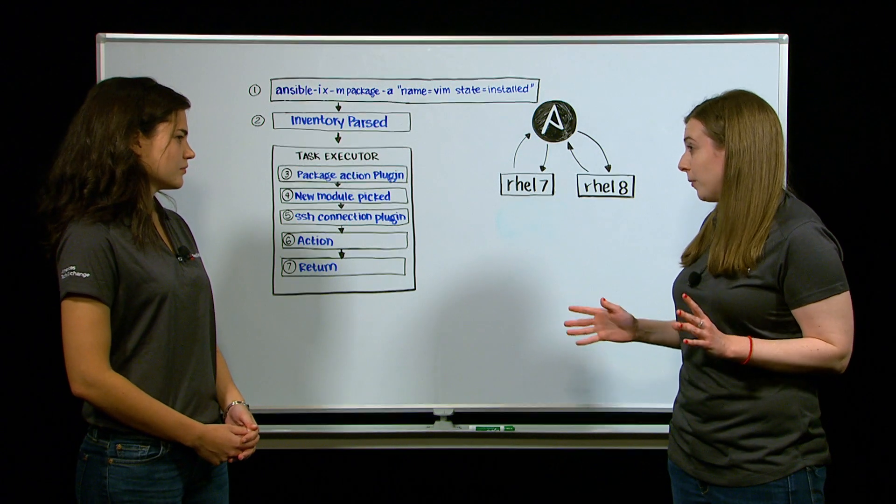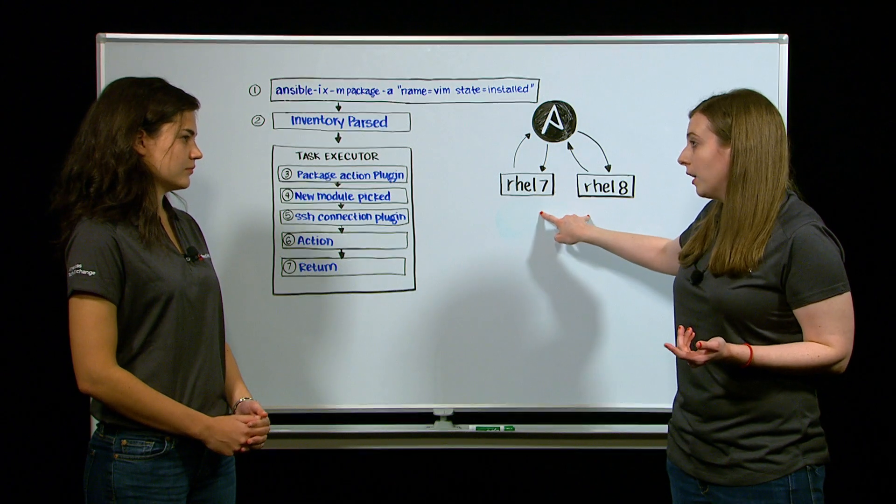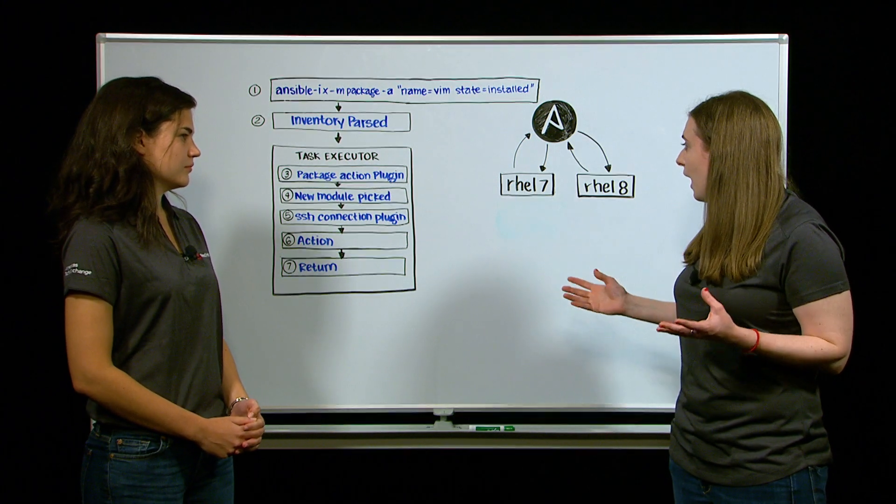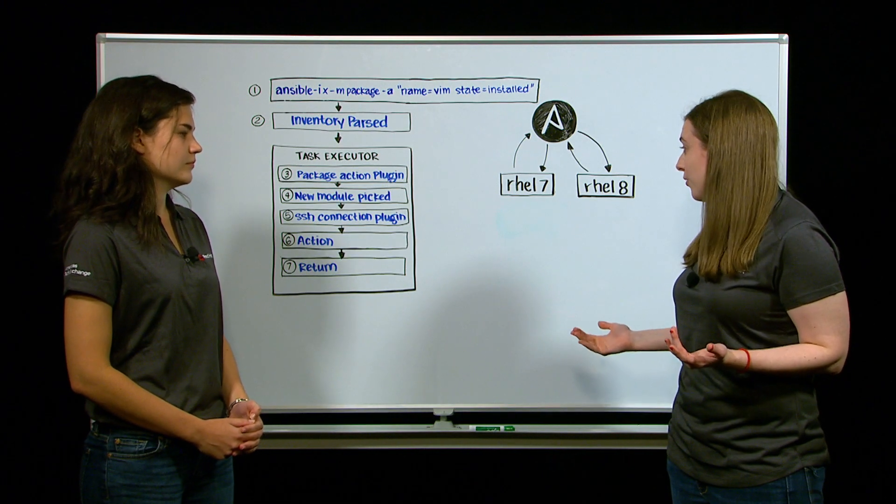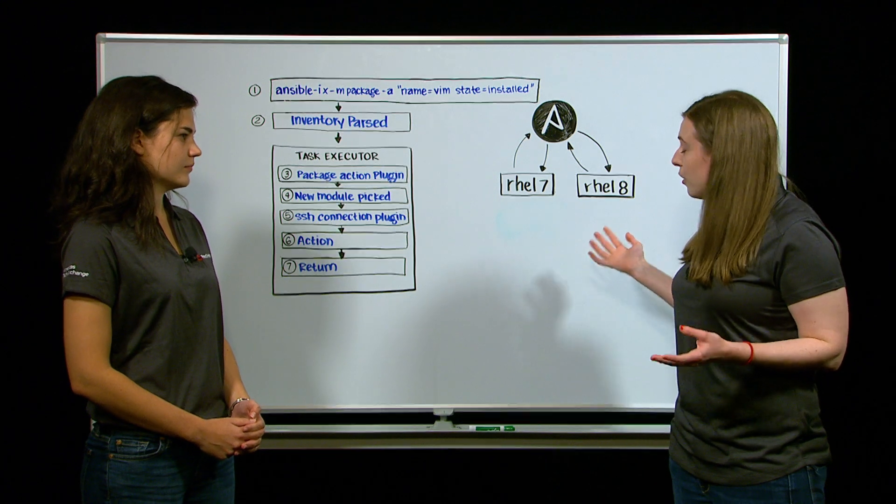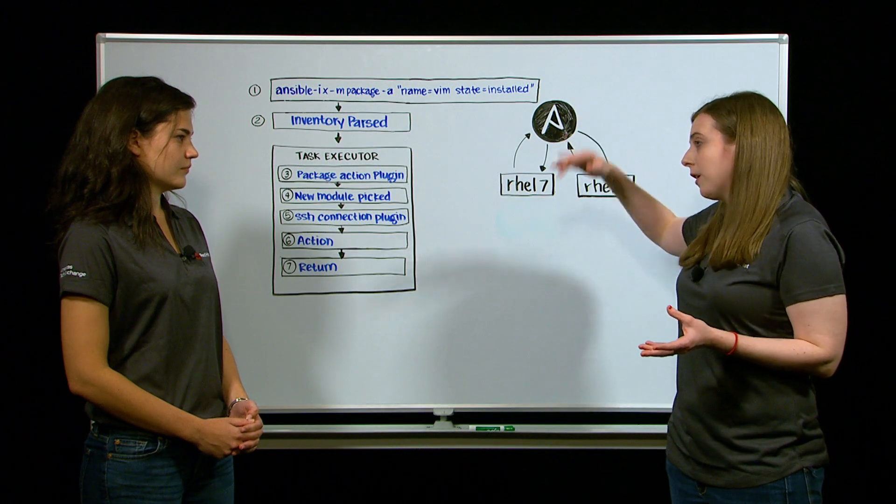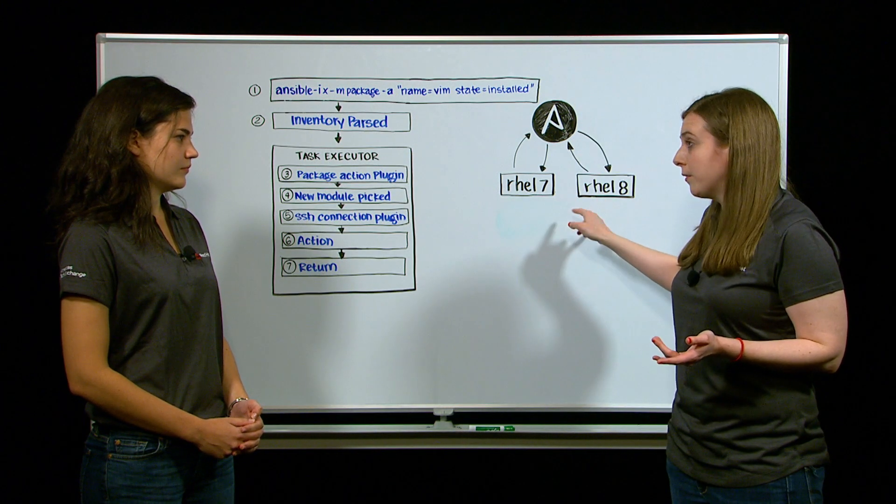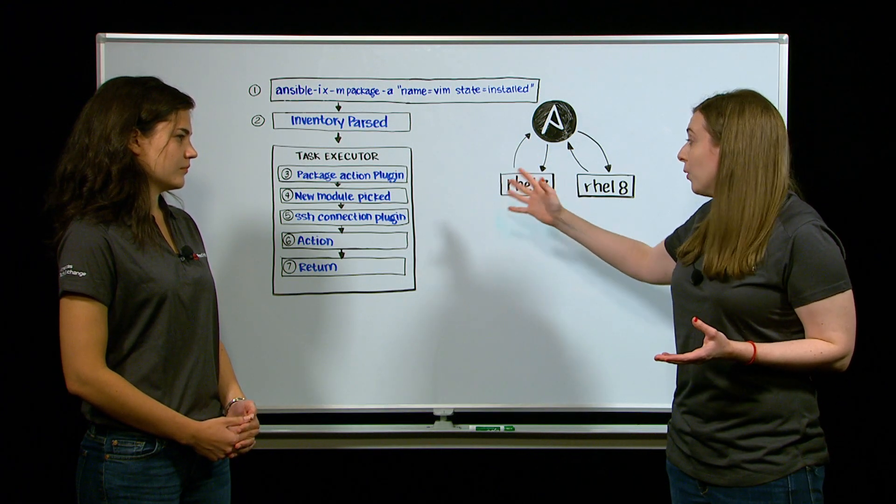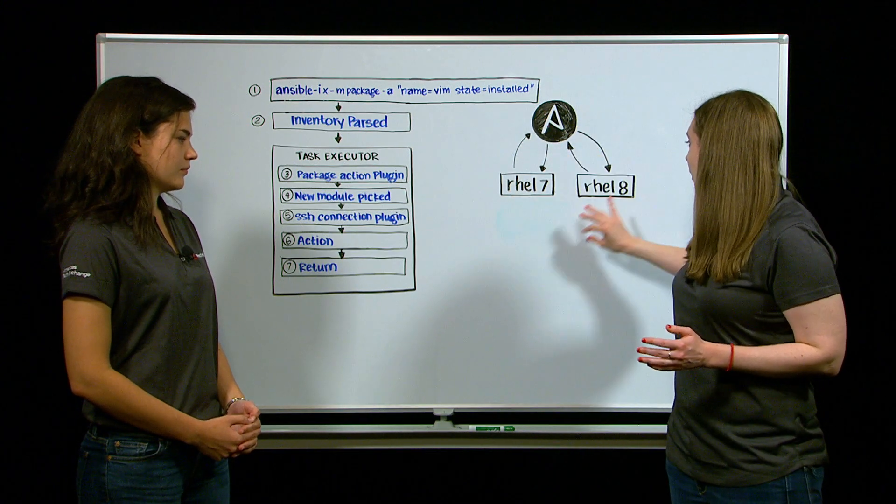It's actually very similar to what you were talking about before with the inventory. So here we have two different types of hosts. We have a rel7 and a rel8 host. And rel7 and rel8 use different package managers. Rel7 has yum and rel8 has dnf. So if we used a more specific plug-in, administrators would have to do a whole bunch of extra work to account for all these different types of hosts and different package managers. The package plug-in will abstract all that away from you. And so you can just run your one command to update all of your hosts.